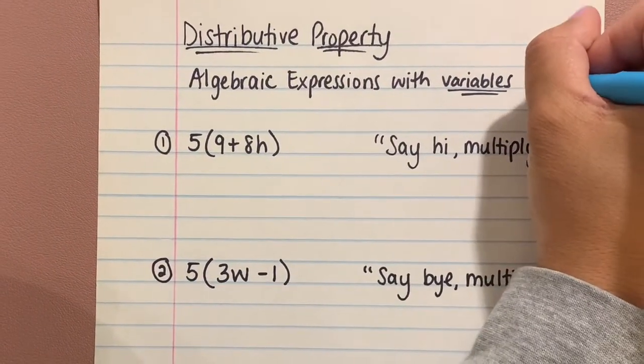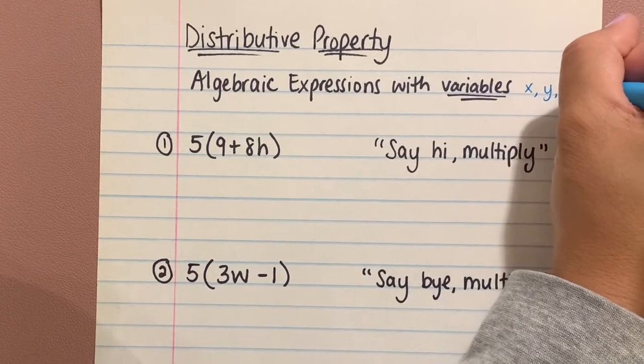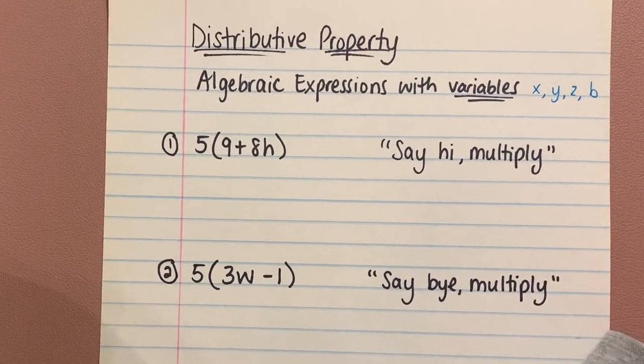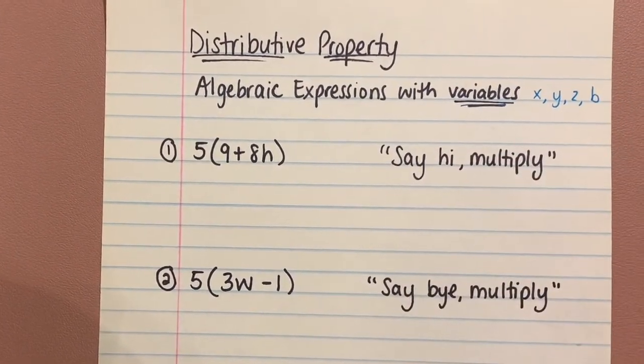So anything like X, Y, Z, B—anytime you see a letter, that's going to be your variable. So if you look at number one,